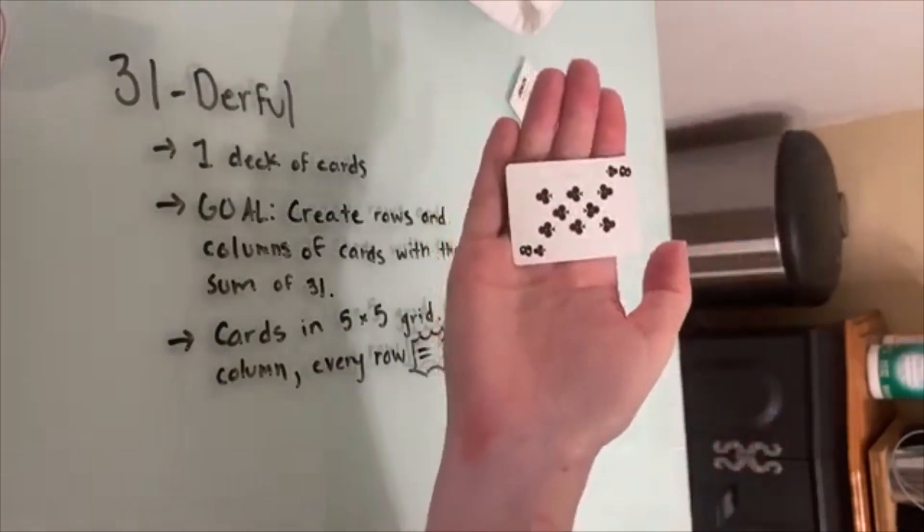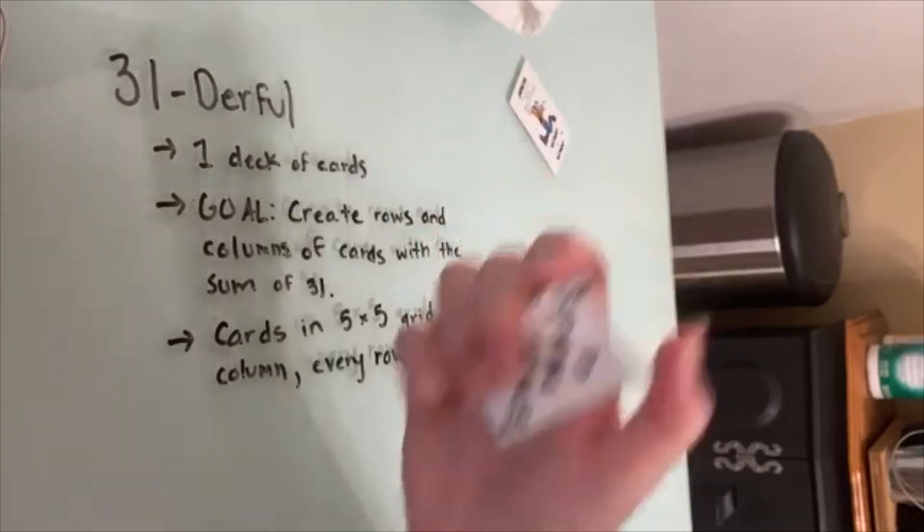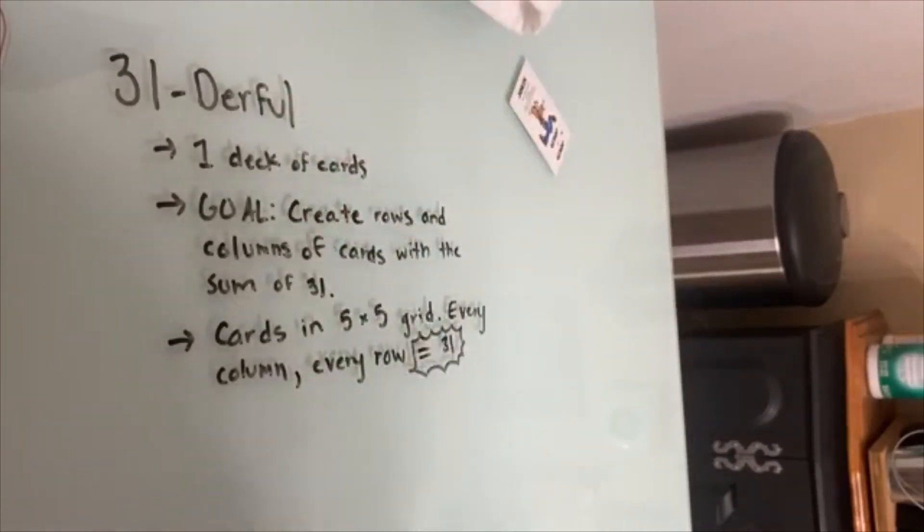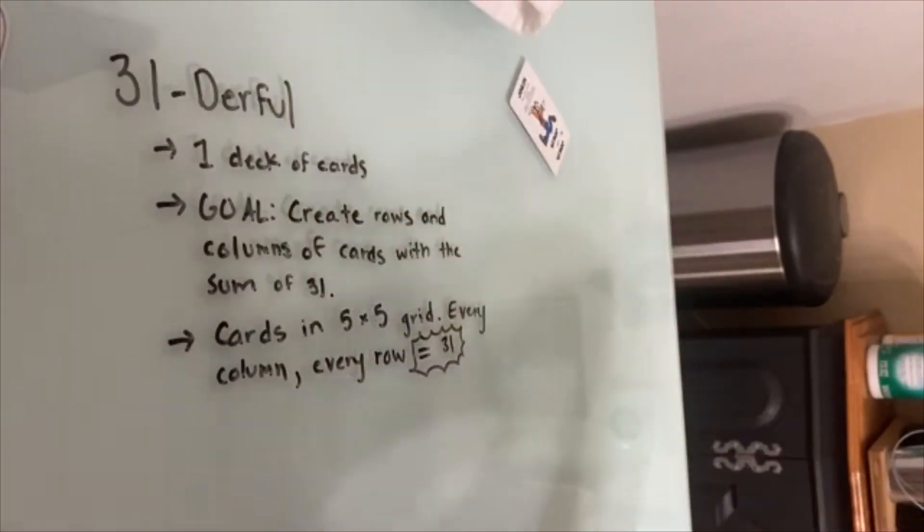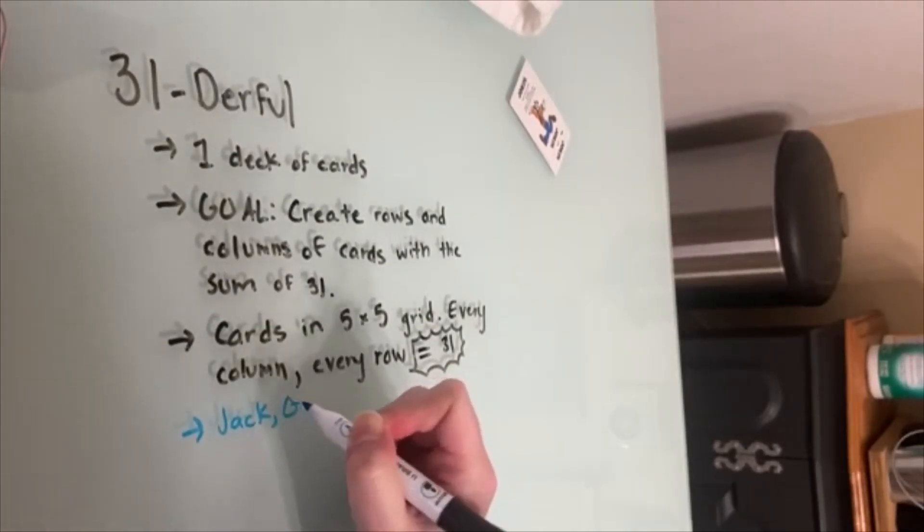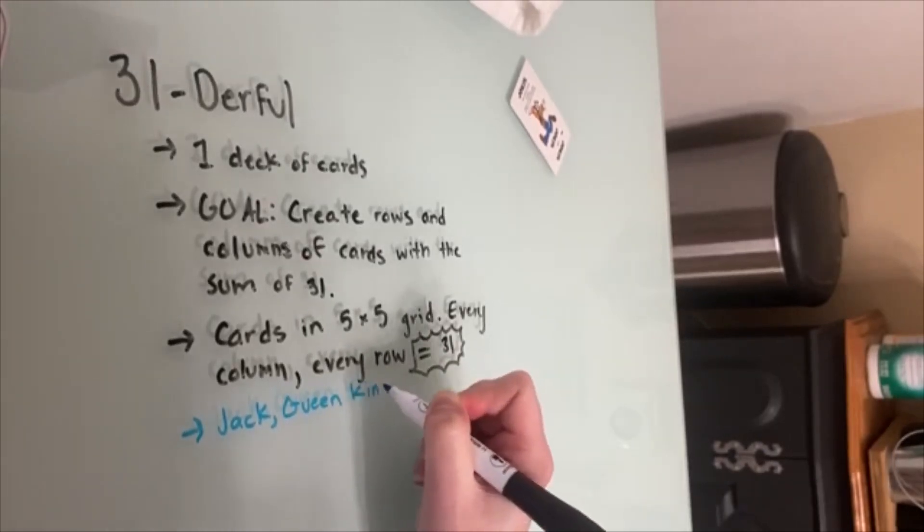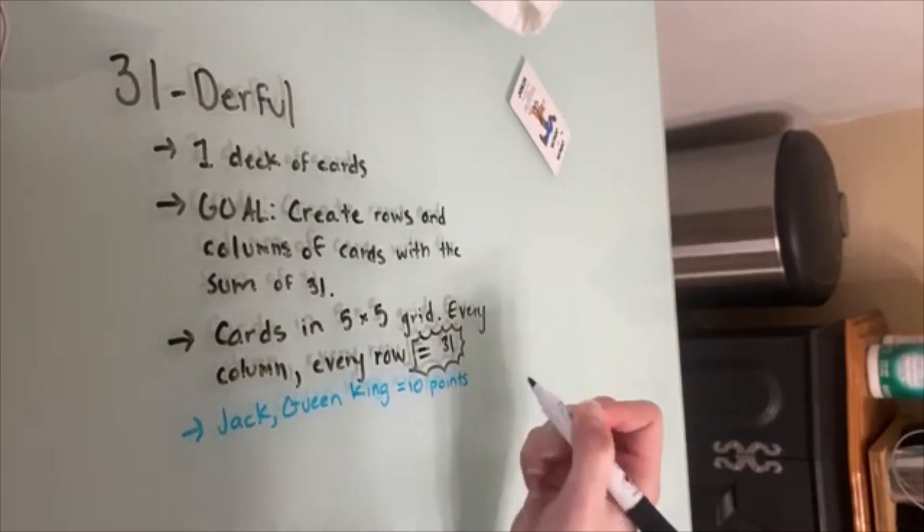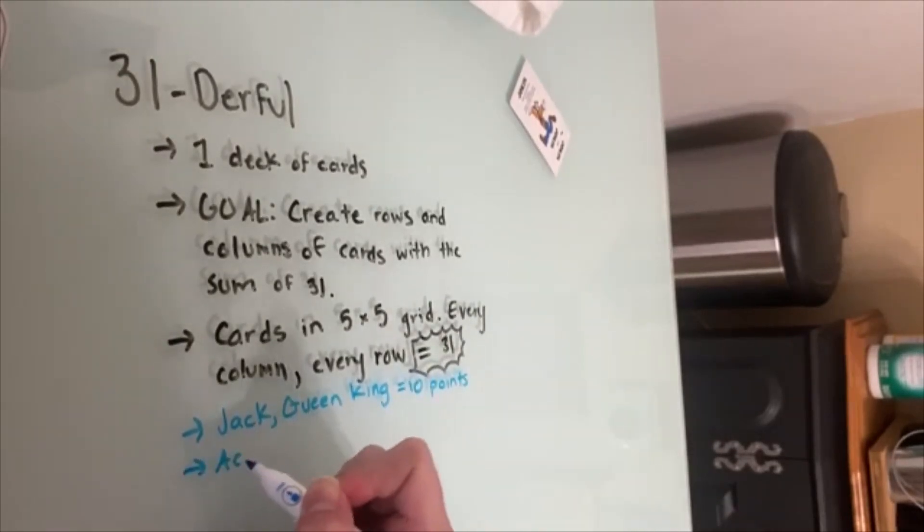Cards with numbers on them, you would just use the number as the value. Any ace is worth 11 points. Jack, queen, king equals 10 points. So for the values, jack, queen, king equals 10 points. Ace equals 11 points.